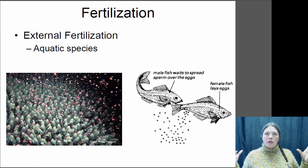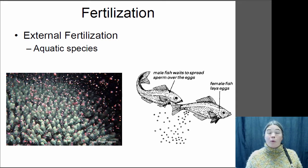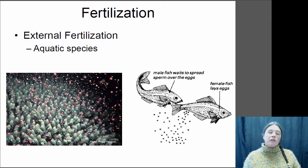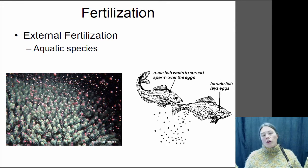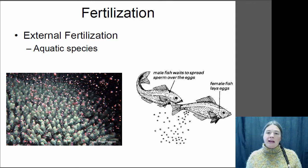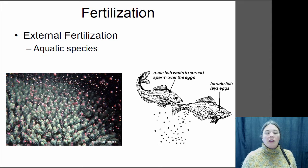So if you're going through sexual reproduction, you need to get sperm to the eggs somehow — they need to be fertilized. If you're an aquatic species living in a nice watery environment, you can actually just release your sperm into the water and have it float around and fertilize eggs that happen to be there. This is called external fertilization.